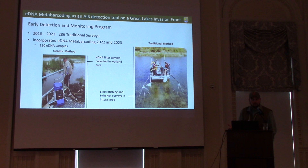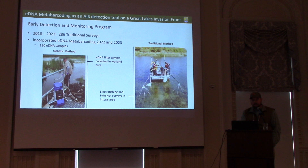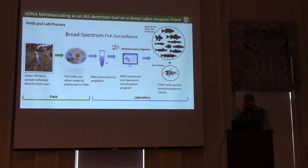In 2022 and 2023, we started to incorporate eDNA — specifically eDNA metabarcoding — to see if it could help us cover more ground spatially in the search for tench, particularly in Lake St. Francis, which is where the big questions are right now. There's a photo of us collecting a water filtration sample with a Smith-Root backpack at Wilson Hill WMA, a wetland where it would be difficult to get a boat in — it's nice to use both boat and shore-based sampling. In total, 130 eDNA samples have been collected. Our first question was: can we detect tench with eDNA metabarcoding — is it a valid detection tool?